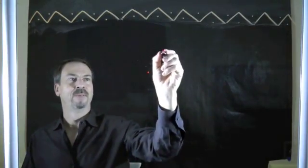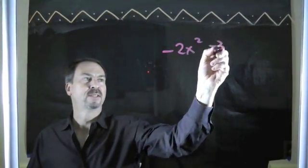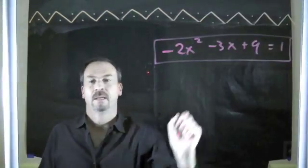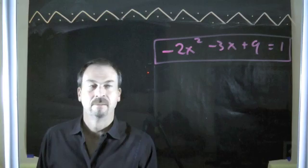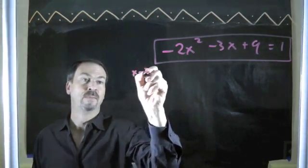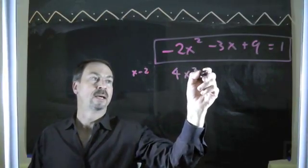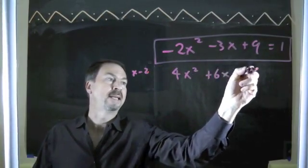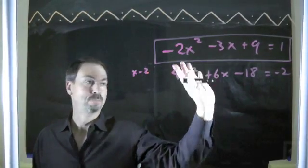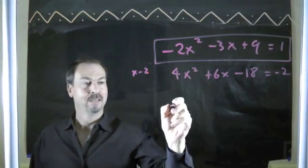Okay. Another example. Negative 2x squared minus 3x plus 9 equals 1. Negative 2x squared. I don't like that. I want it to be a perfect square. Let me multiply through by another negative 2. That gives me 4x squared plus 6x minus 18 equals negative 2. 6x looks good. So maybe I'm done. So let's draw the box.